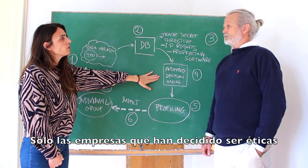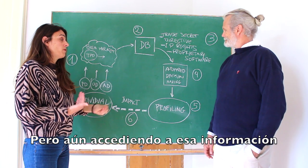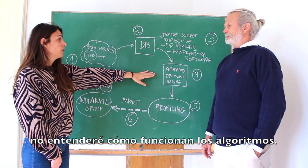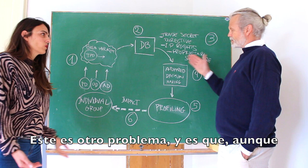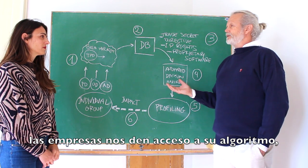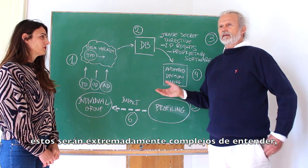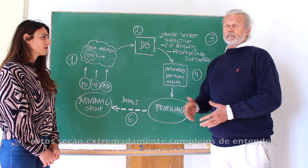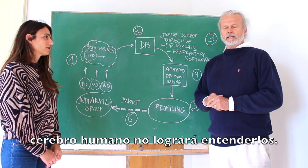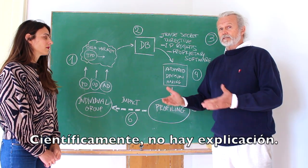This is an ethical decision from companies — whether they want to allow a data subject access. But even if I as a data subject want to access this information, it's not going to be useful for me because I don't understand algorithms. That's a whole other issue. Even if the company is nice and says okay, you can know which particular algorithm we are using — these learning algorithms are so complex, they have so many parameters, typically millions of parameters, put together in ways that the human brain can't really understand. We don't even have theories that can tell us yet how these decisions are made, so scientifically it's not really clear what happens.